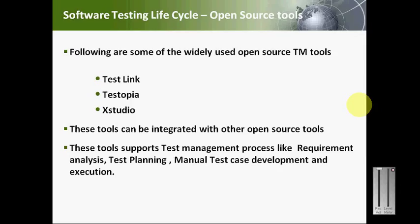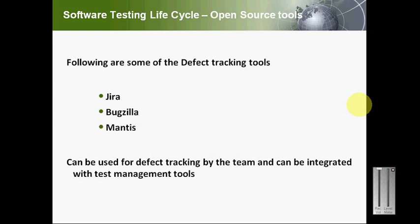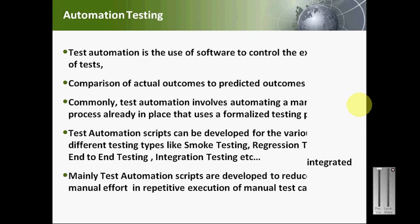For test management, TestLink is a widely used and proven tool. Testopia is another test management tool from Mozilla. XStudio is mainly built for agile development and testing. For defect tracking, Jira, Bugzilla, and Mantis are available — Jira and Bugzilla are world-widely used. For automation tools, there are hundreds of tools available. The phases you automate typically include smoke testing, regression testing, and integration testing.